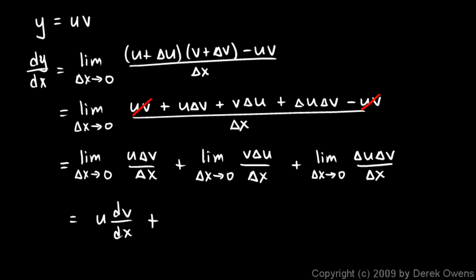The second term has the v, and as these guys become infinitely small, the delta u and the delta x, we end up with du dx. So this is the v times the du dx.